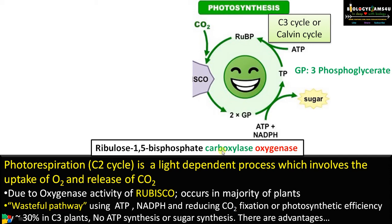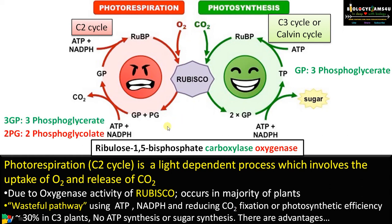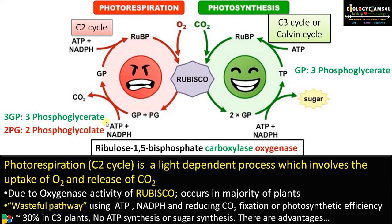Rubisco's carboxylase activity is utilized for binding to carbon dioxide. Rubisco also has a second activity, which is the oxygenase activity. If the carbon dioxide concentration is low and oxygen concentration is high, Rubisco will bind to oxygen, resulting in the formation of 3-phosphoglyceric acid that enters the Calvin cycle, and 2-phosphoglycolate, a C2 compound.